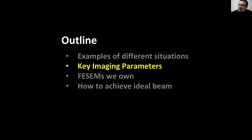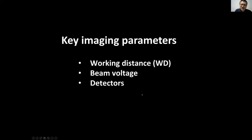So we've talked about some examples. To get a good image, you need to pick the right voltage, the right working distance, and the right detector. Different samples require different settings. The three key parameters we're going to discuss are: working distance, beam voltage, and detectors.